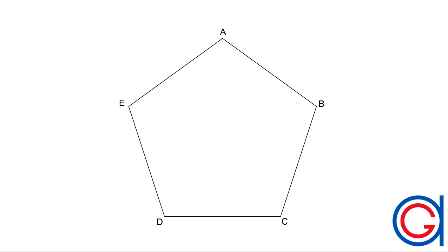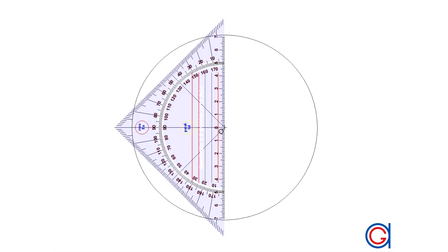So the first step is we are going to draw a regular pentagon. Let's draw a regular pentagon inscribed in a given circumference. The first thing we are going to do is to draw a vertical diameter, which cuts our circumference at points A and P, as can be seen here in the video.